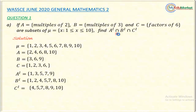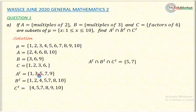Now I will answer the question by intersecting the three sets. Intersection means finding common elements across all three sets. Checking element by element: 5 appears in A prime, B prime, and C prime. 7 also appears in all three sets. These are the only two elements common to all three, so A prime intersect B prime intersect C prime = {5, 7}.